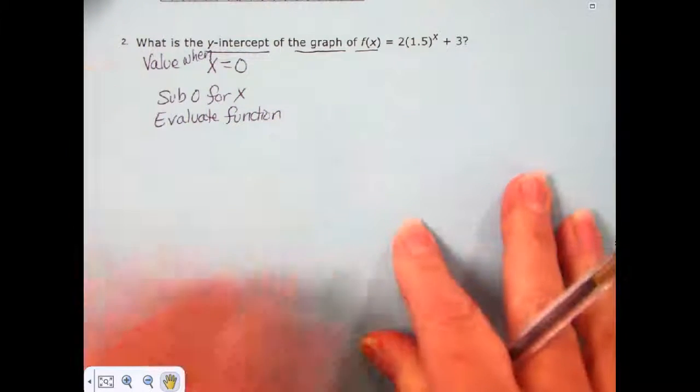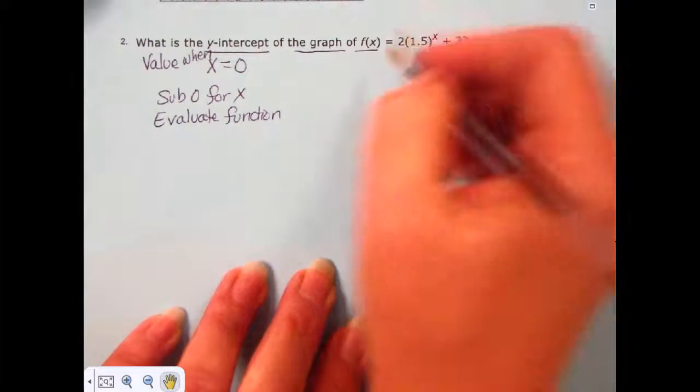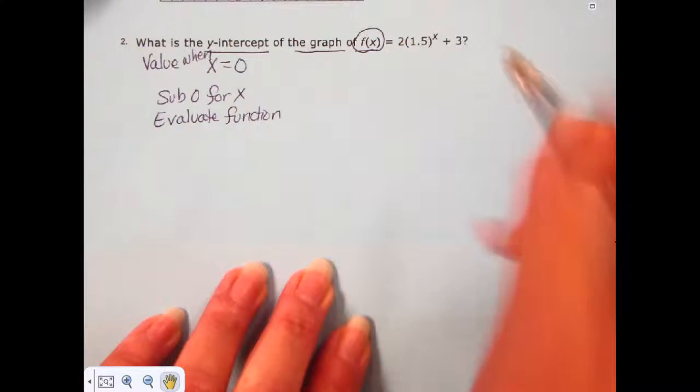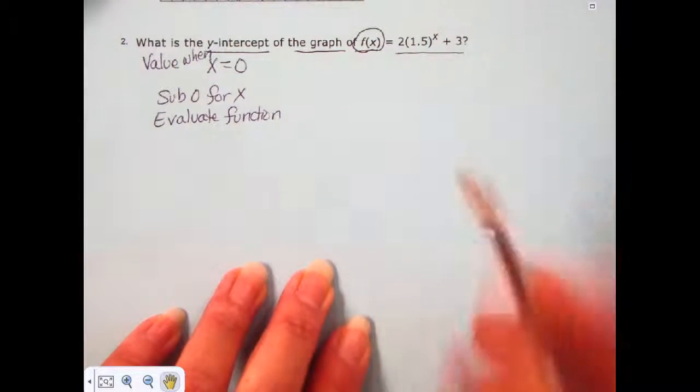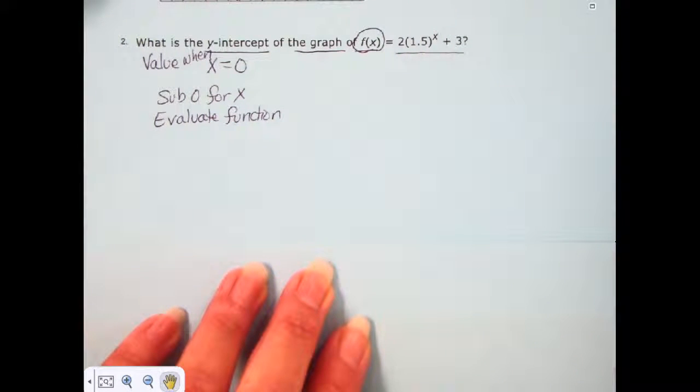When we substitute zero for x, we take the function that we have since everything that we need to do to evaluate is on the left-hand side of the equation and nothing is on both sides. We don't have to move anything around.